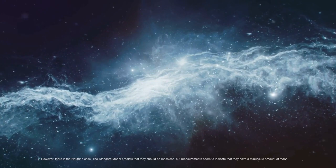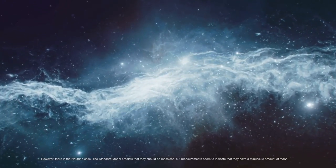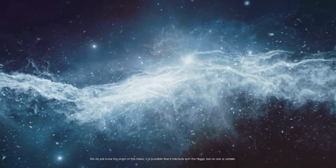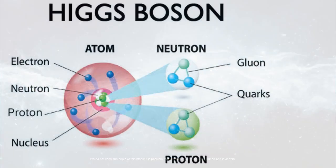However, there is the neutrino case. The standard model predicts that they should be massless, but measurements seem to indicate that they have a minuscule amount of mass. We do not know the origin of this mass. It is possible that it interacts with the Higgs, but no one is certain.